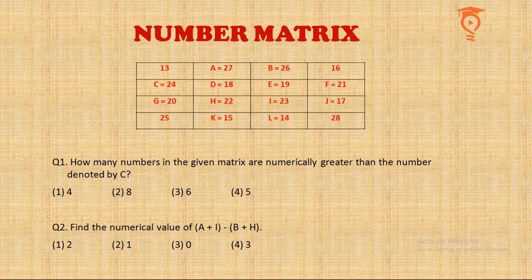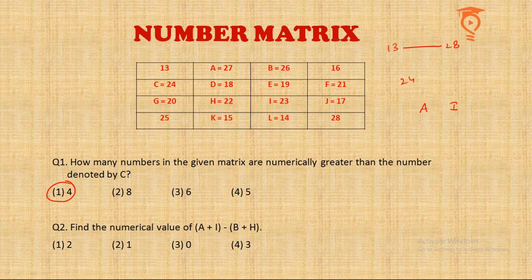Question 1: How many numbers in the matrix are numerically greater than the number denoted by C? C is 24, and the range is 13 to 28, so there are four numbers greater than 24: namely 25, 26, 27, and 28. Question 2: Find the numerical value of (A + I) minus (B + H). A is 27, I is 23, so A plus I is 50. B is 26, H is 22, so B plus H is 48. The answer is 50 minus 48 equals 2.